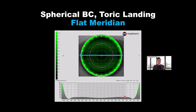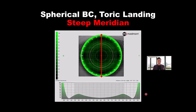So let's go back to the drawing board and build a toric landing. Across the flat meridian where we don't need much effect, we're going to have a very subtle oblate-type shape — thinner in the center, thicker toward the periphery — to create maybe a half-diopter. In the steep axis, we want that lens to land down and trap that fluid layer 360 degrees around, have a healthy reservoir all the way around, better centration, better alignment, better comfort.